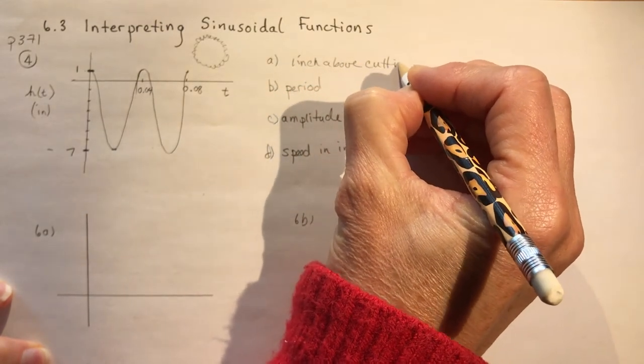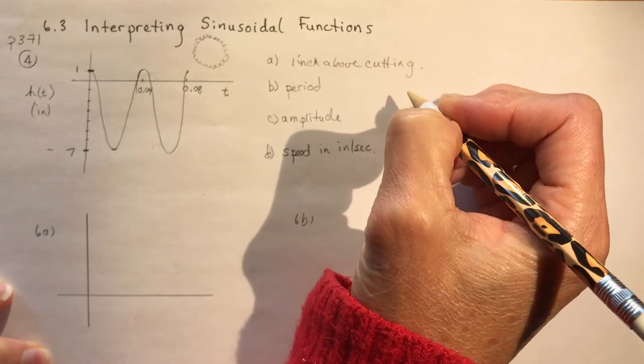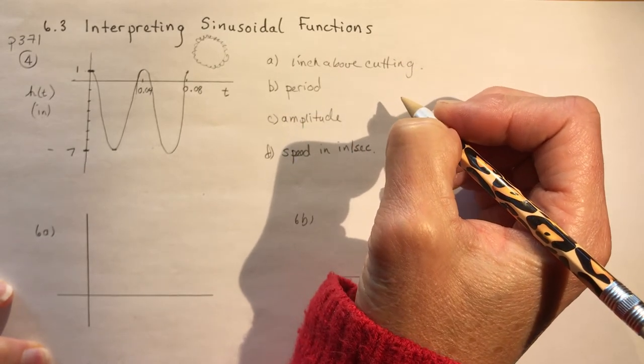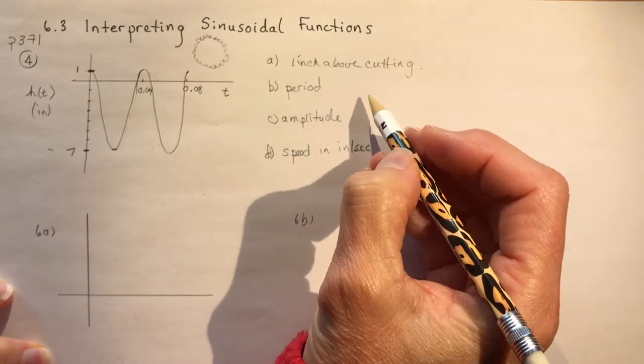So this blade is cutting through something. It's a saw, so I'm guessing it's wood.